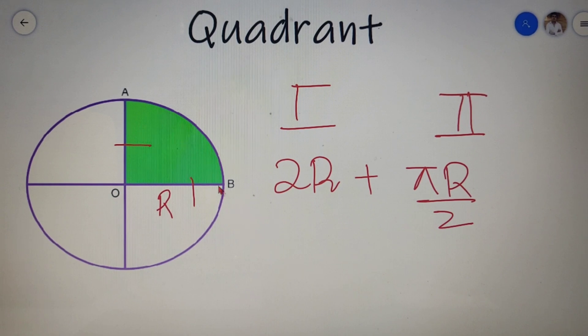So the final answer for the perimeter of a quadrant will be equal to R times (2 plus π by 2).